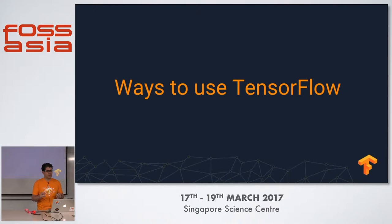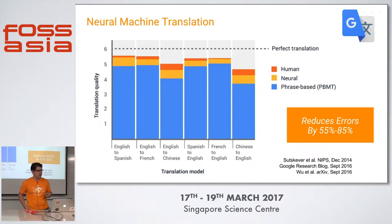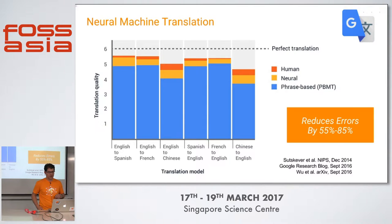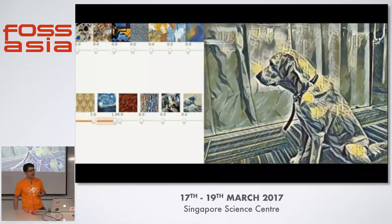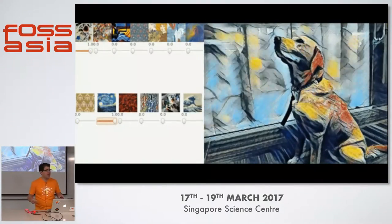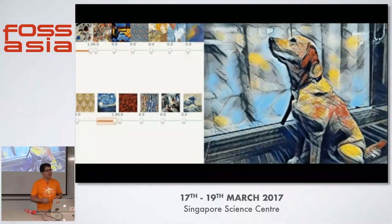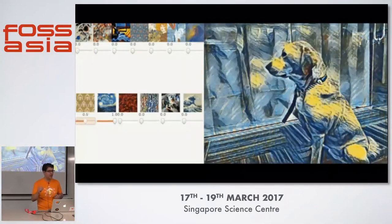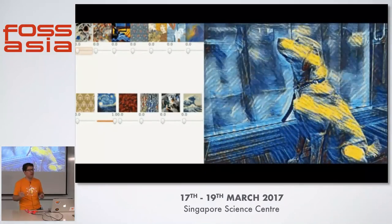So what has TensorFlow been used for? One application at Google is increasing the accuracy of neural machine translation — using a TensorFlow model, we were able to reduce translation errors from 55% to 85% improvement, especially between English and Chinese, which is very difficult. On the lighter side, TensorFlow has been used for artistic stylization. Usually you have to train a model on a specific style from scratch. But research done at Google Brain allows you to blend styles after the fact — you can say 50% Van Gogh or 50% Japanese Wave — and try it in real time.